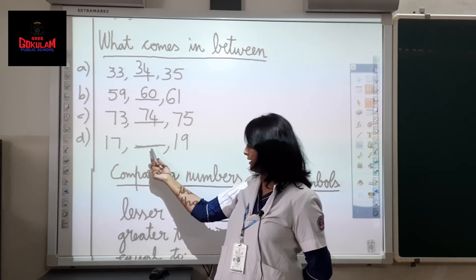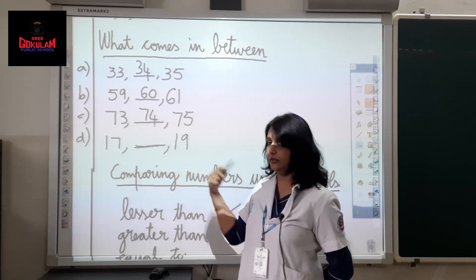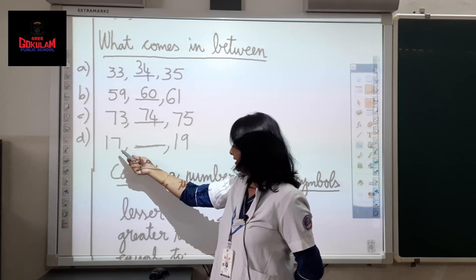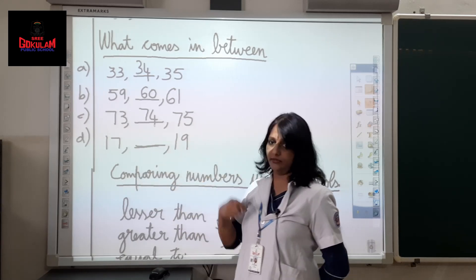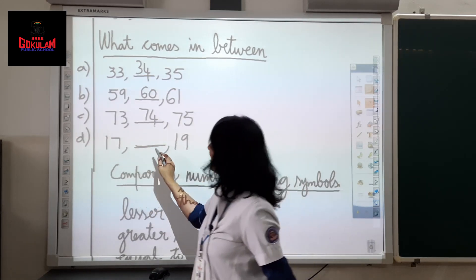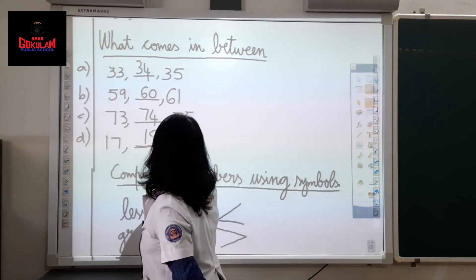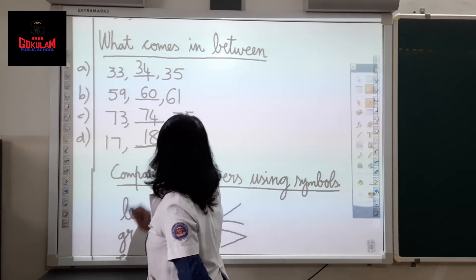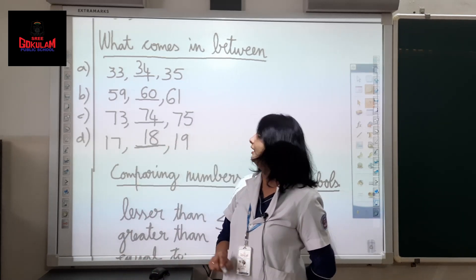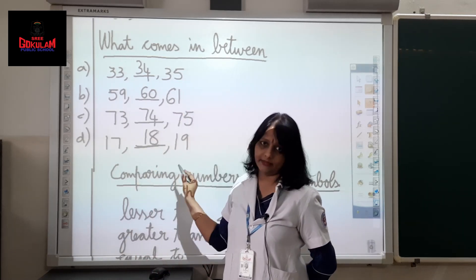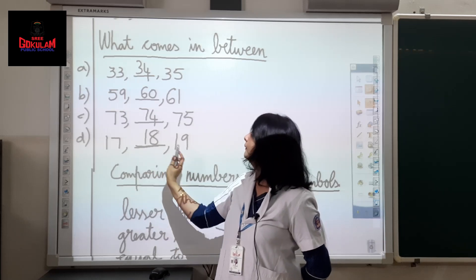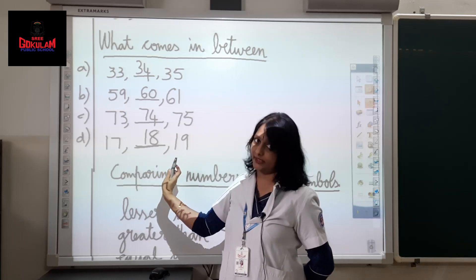Next one: 17 dash 19. Which number comes between 17 and 19? 17, then 18, then 19. So these are some examples of the number which comes in between.